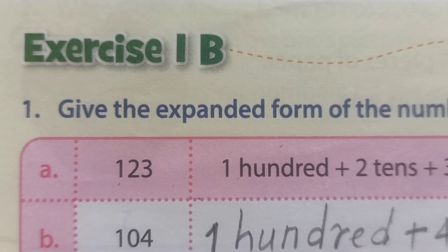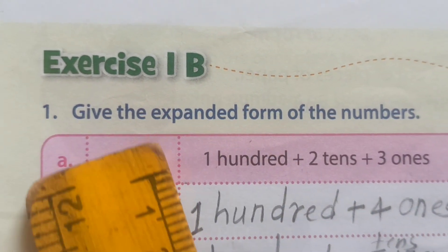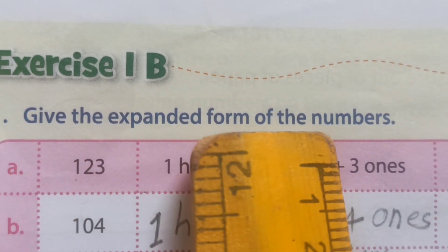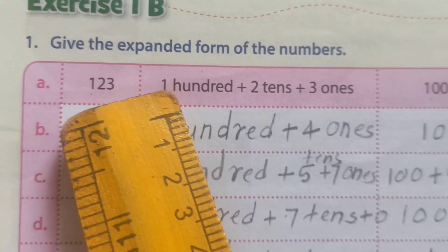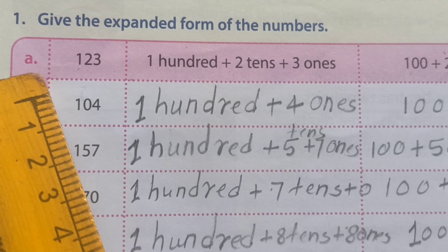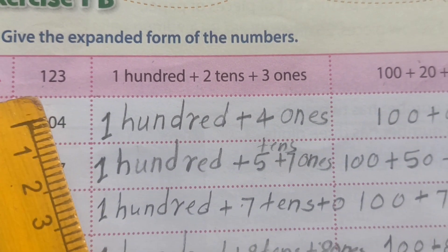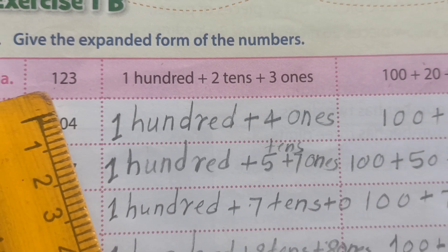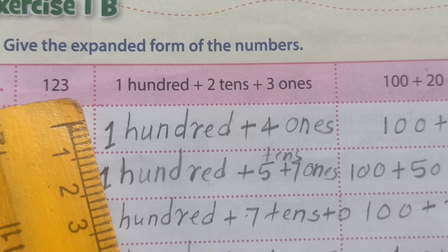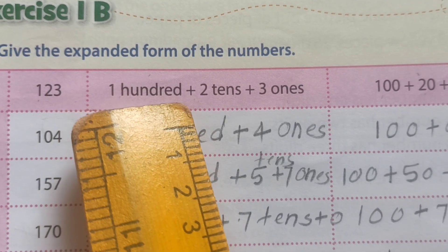First one question. Who can try reading? Give the expanded form of the numbers. You can see here one chart. First one, A number example — our textbook showing how to solve. See, 123. This one number. How we expand? 100 — H-U-N-D-R-E-D, 100.